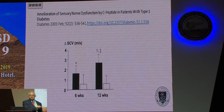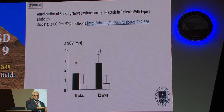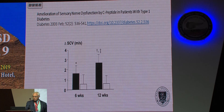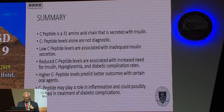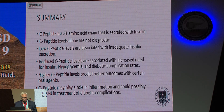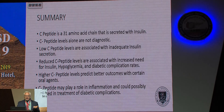This has not yet reached clinical approval or come to market, but it does suggest that preserving natural insulin production is beneficial. The drugs you can use to preserve beta cell function are good — and when beta cell function is gone, you don't want to wait until the last minute to start insulin. Hopefully you've taken something from this lecture about C-peptide: a 31 amino acid marker secreted with insulin. Even though C-peptide levels alone are not diagnostic, they are associated with inadequate insulin response, increased need for insulin, hypoglycemia, and diabetic complication rates. On the other hand, high C-peptide levels predict better outcomes with certain oral agents, and maybe C-peptide as a molecule may help us further in the future.